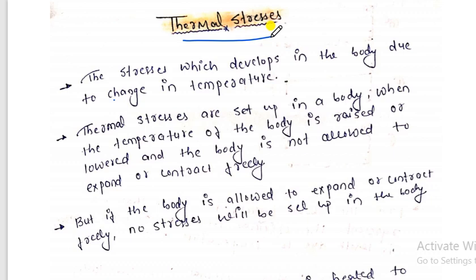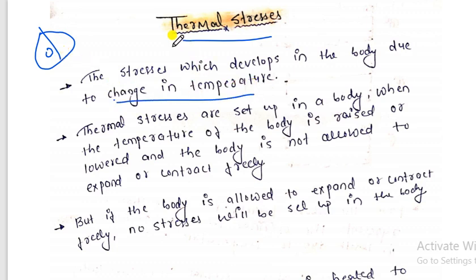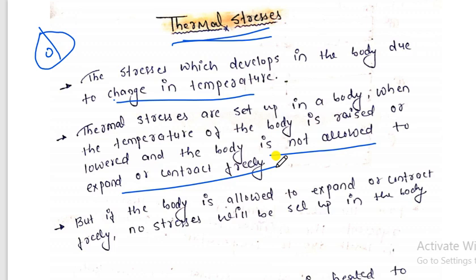Let's understand thermal stress. It is a type of stress which is induced in a body due to change in temperature. Suppose this is a body — the thermal stress will be induced because of change in temperature. But there is one condition: when the body is not allowed to expand and contract freely, at that point thermal stress will be set up. If the body is allowed to expand or contract freely, then no stress will be set up.